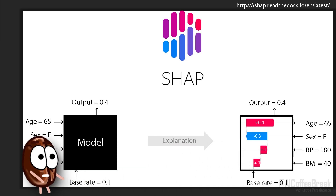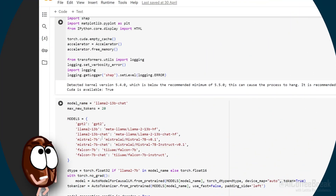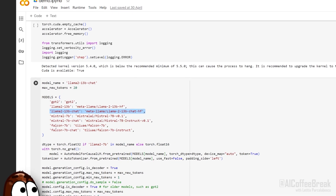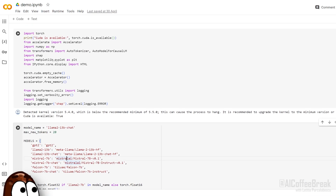So the overall idea is that we start from this base value, we add the Shapley values for each input, and we get the model's prediction. Now, how does this look for a more complicated model, such as a LLaMA2 language model? Let's see how we can use the Shap library to interpret the model's predictions.